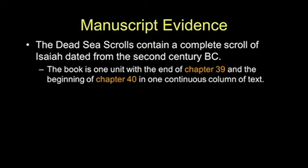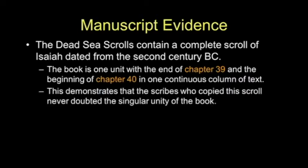There is no manuscript evidence supporting this nonsense embraced by so many seminaries. This demonstrates that the scribes who copied the scroll never doubted the singular unity of the book. The New Testament authors and the early church quoted both sections and attributed them only to one Isaiah. The New Testament authors, quoting from both sections, attributed only to one Isaiah, as I've hammered here.